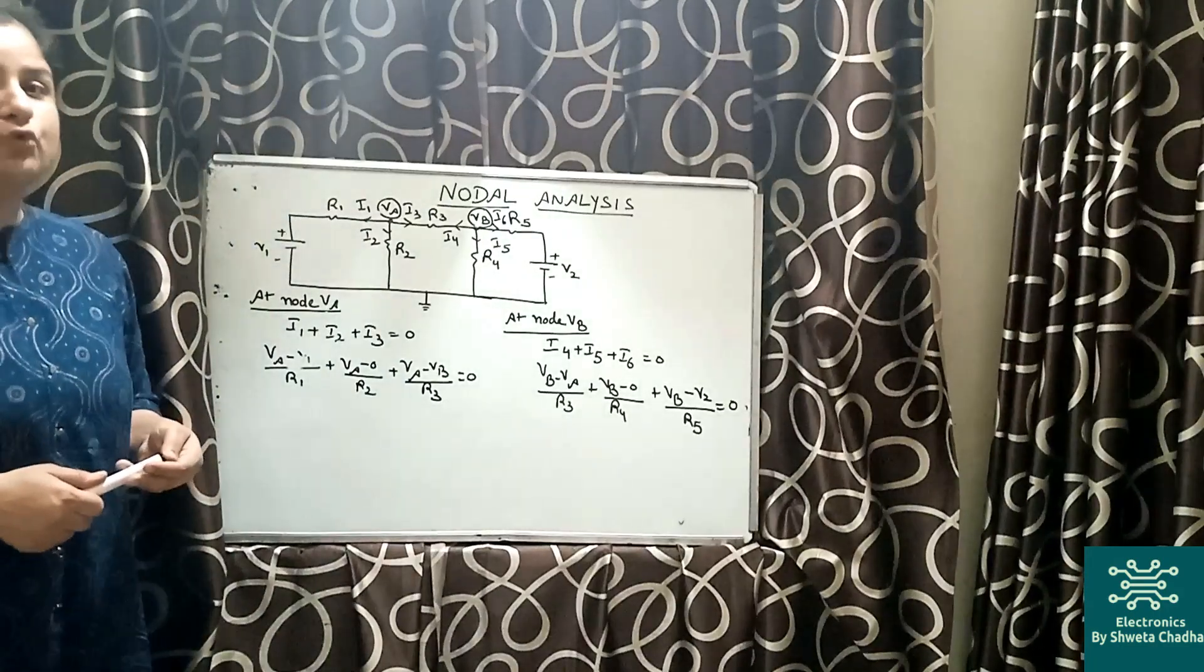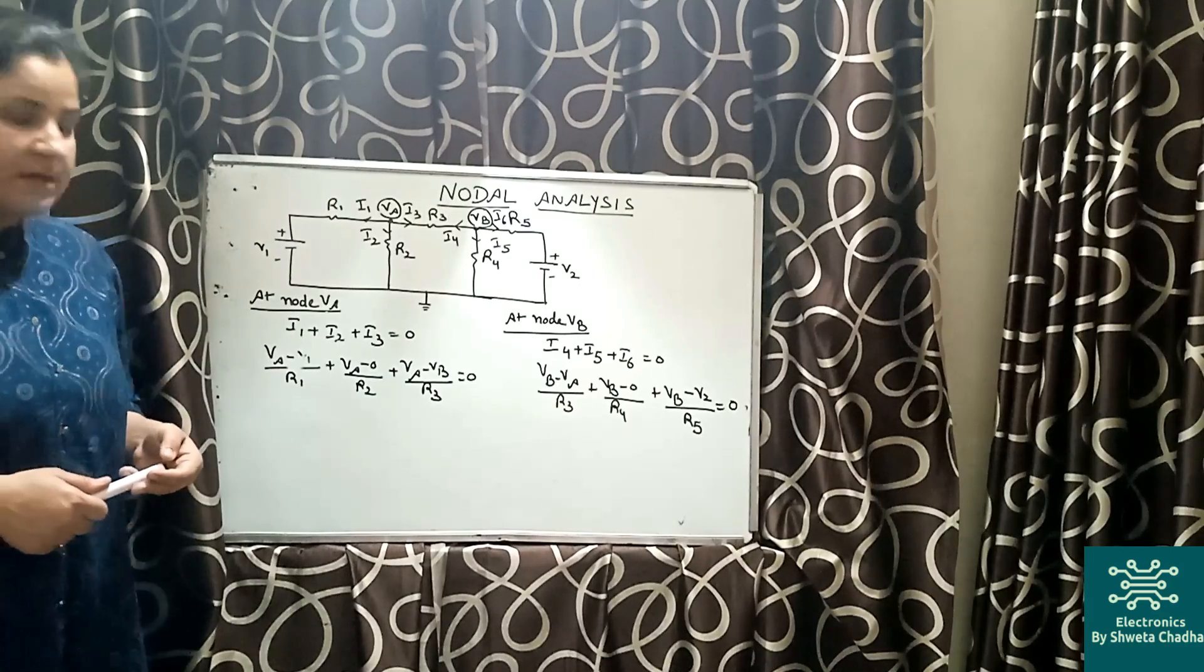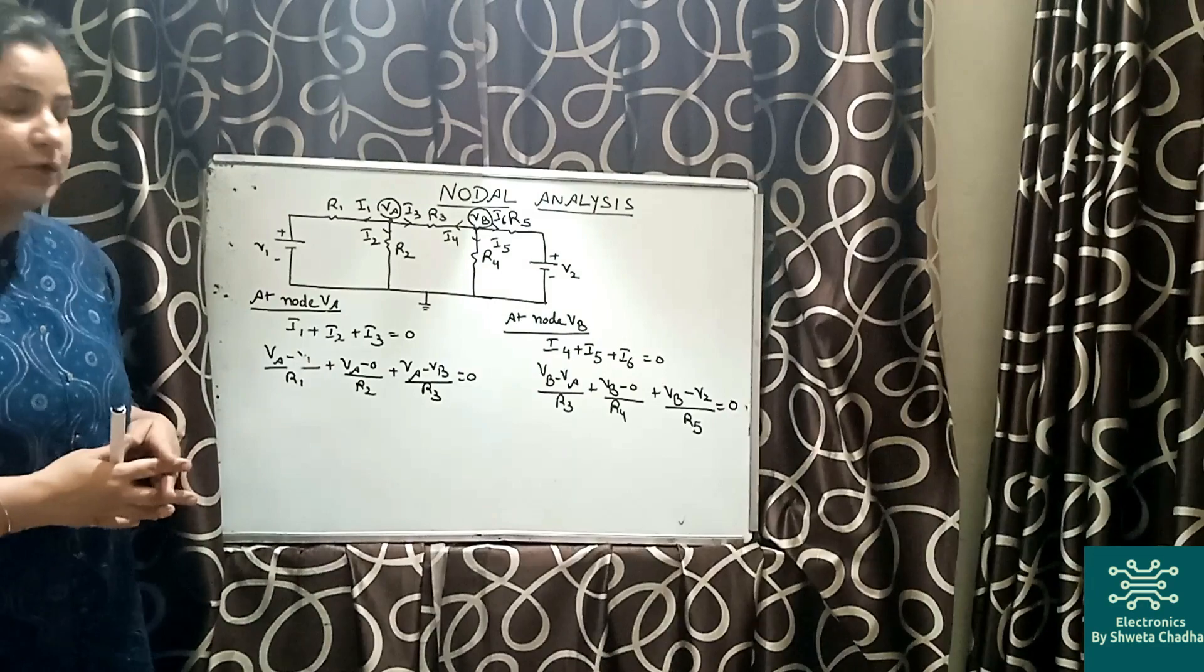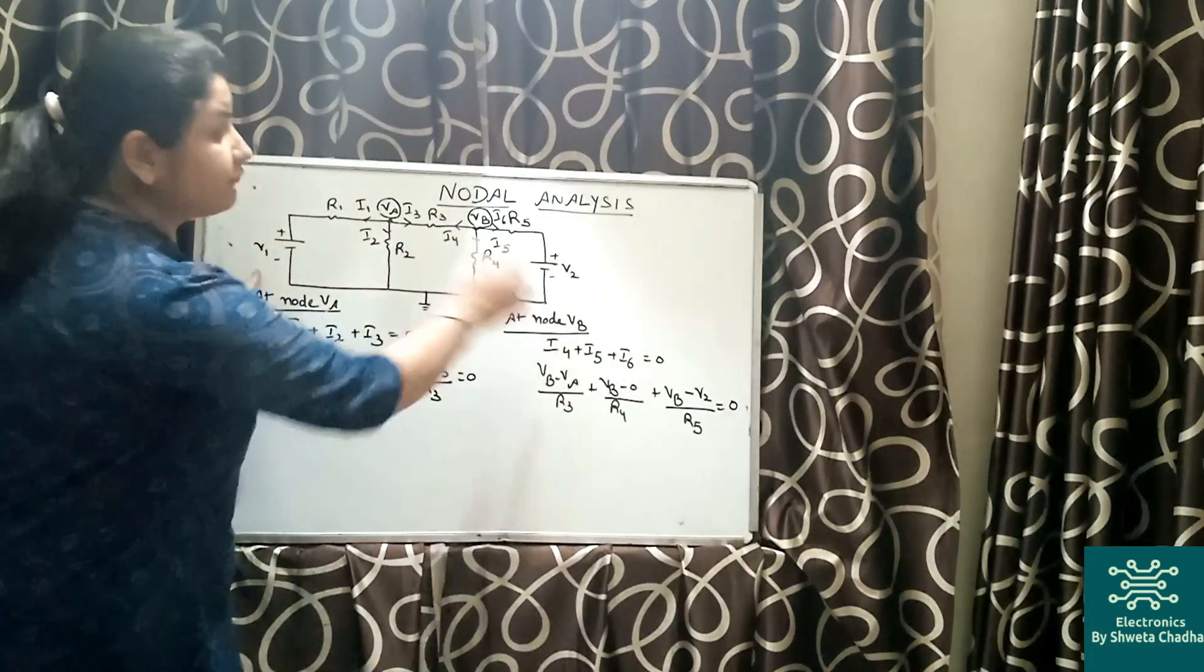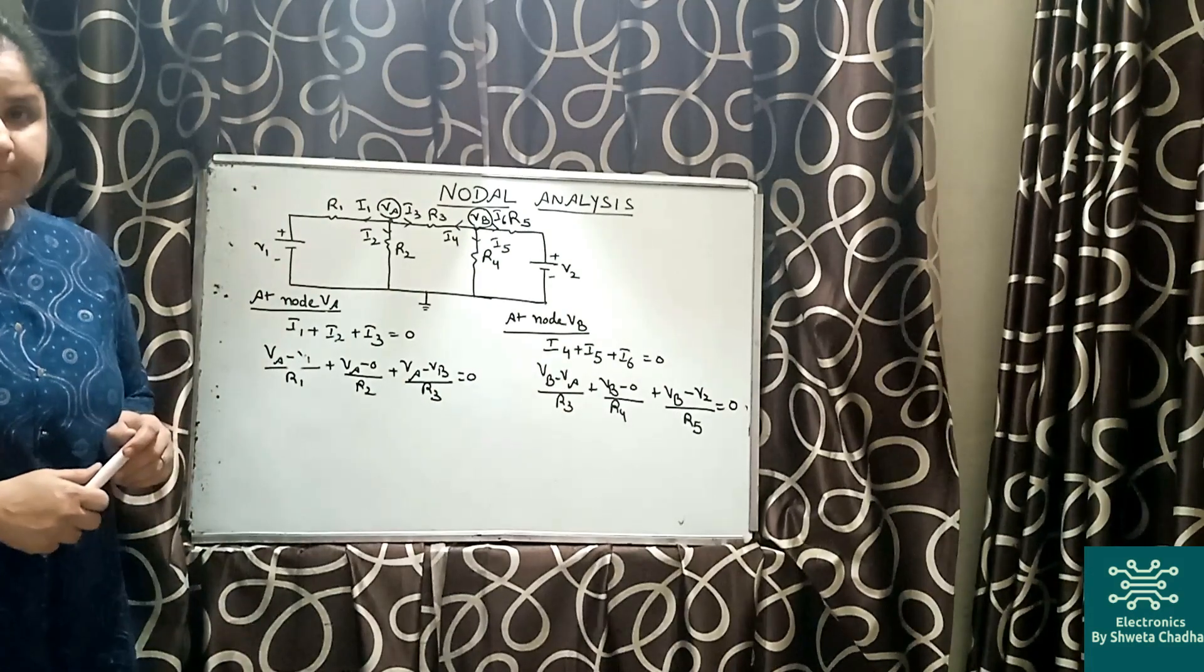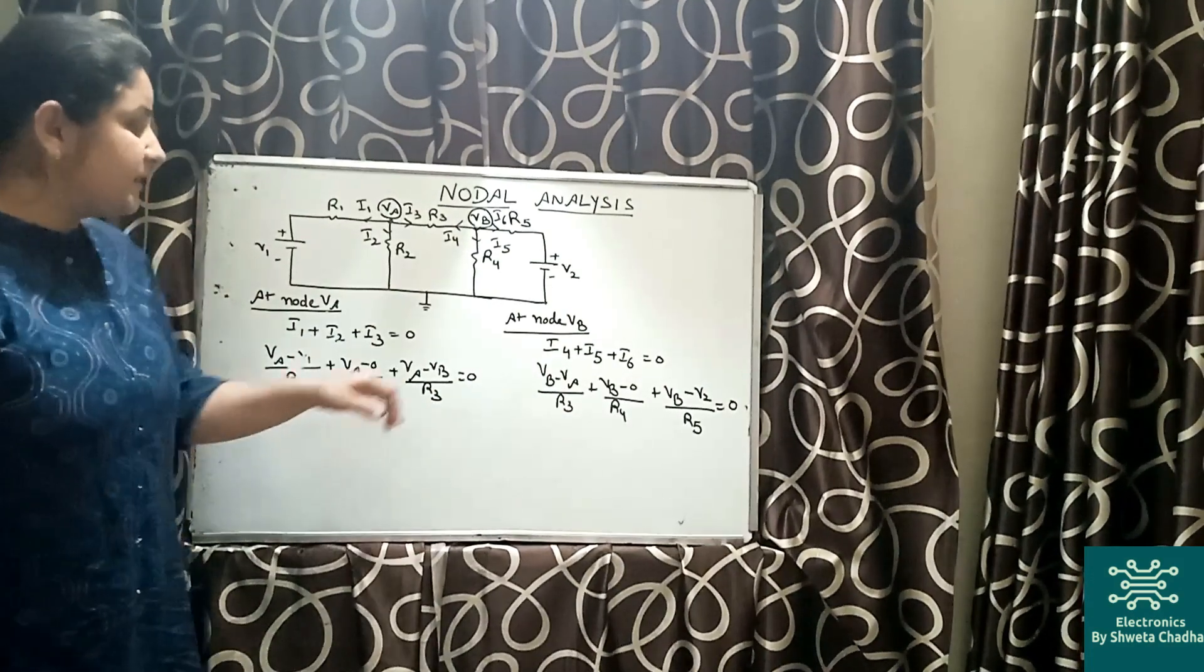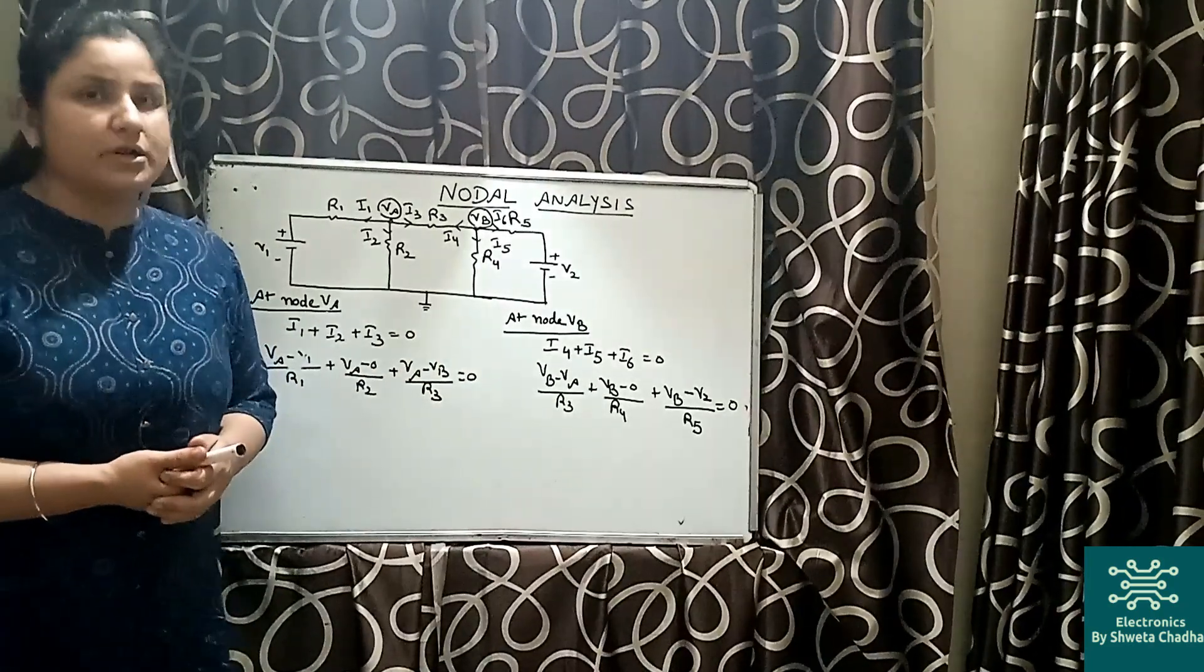This is how we can actually write down the equations with the help of nodal analysis, which is nothing but the application of Kirchhoff's current law. So now we have two equations. In numericals, everything will be available to you: all the values of resistances, the value of input voltages V1, V2 respectively, and thus you can easily calculate the value of VB and VA by solving two equations for two unknown variables.